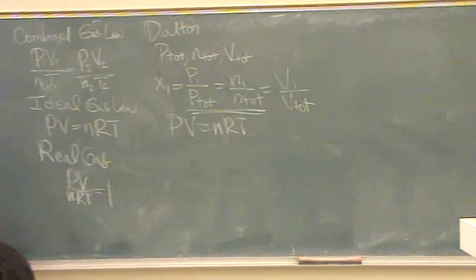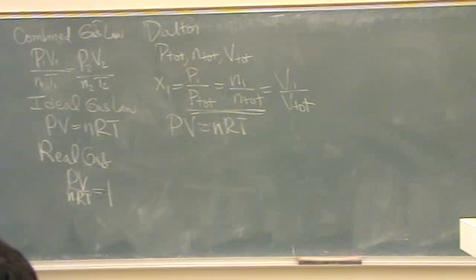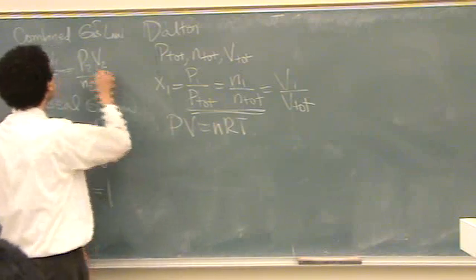Because sometimes you have, like we did on a previous problem, n, r, and t, but we didn't have v, for example. So that's another type.